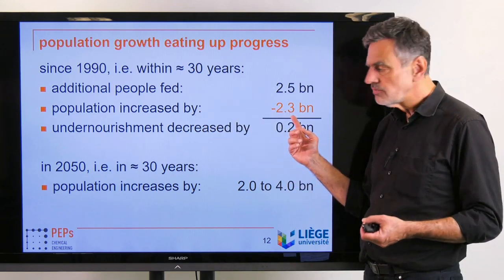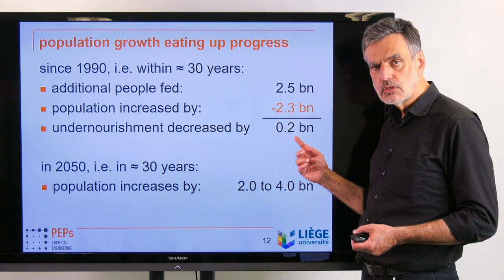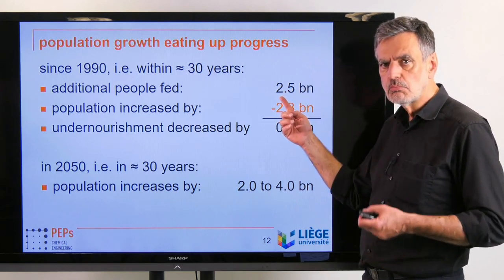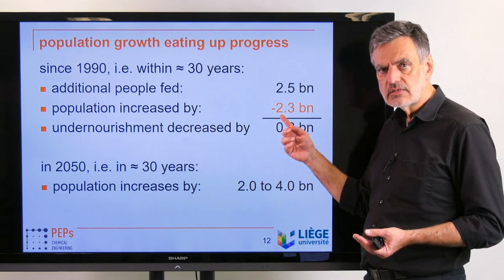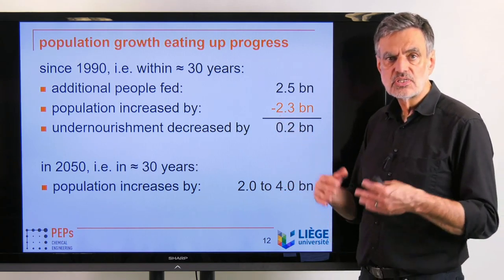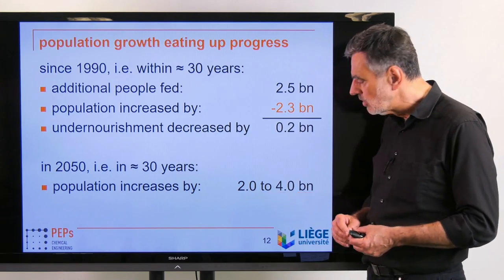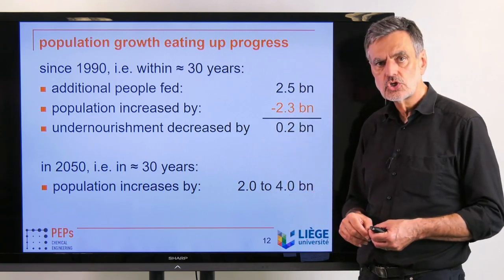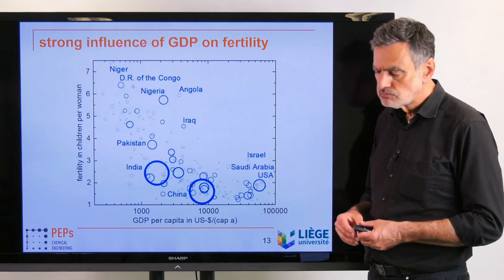The reference year for the UN sustainability goals is 1990. Since then, the world population increased by 2.3 billion people. At the same time, the number of undernourished people decreased from 1 billion to 800 million — a reduction of 200 million. Overall, we are feeding 2.5 billion more people today compared to 1990. Agricultural productivity has significantly increased, but population growth ate that up directly.